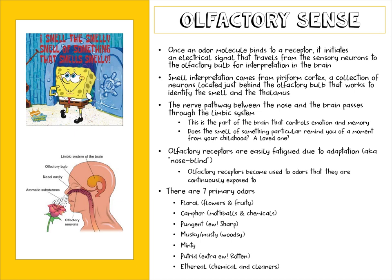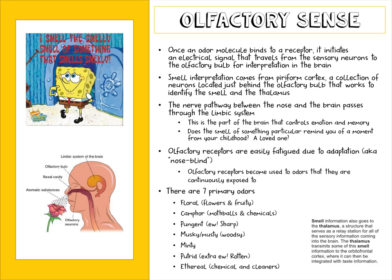When an odor molecule binds to a receptor, it initiates an electrical signal that travels from the sensory neurons to the olfactory bulb for interpretation. Smell interpretation comes from the piriform cortex — a collection of neurons located just behind the olfactory bulb — which works to identify the smell. The smell information then goes to the thalamus, which serves as a relay for all sensory information and can transmit some smell information to the orbitofrontal cortex, where it can be integrated with taste information.